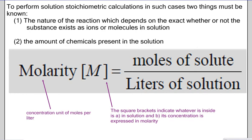Now we come to the stoichiometry part of solutions: knowing their molarity. Molarity is the concentration — how much you have in a set space. In chemistry, we talk in terms of moles, so molarity is moles per liter. More specifically, it's moles of solute per liter of solution. Molarity is the concentration of moles per liter of solution, and we symbolize it with square brackets. For example, the concentration of chlorine ions in solution would be written with brackets around Cl.